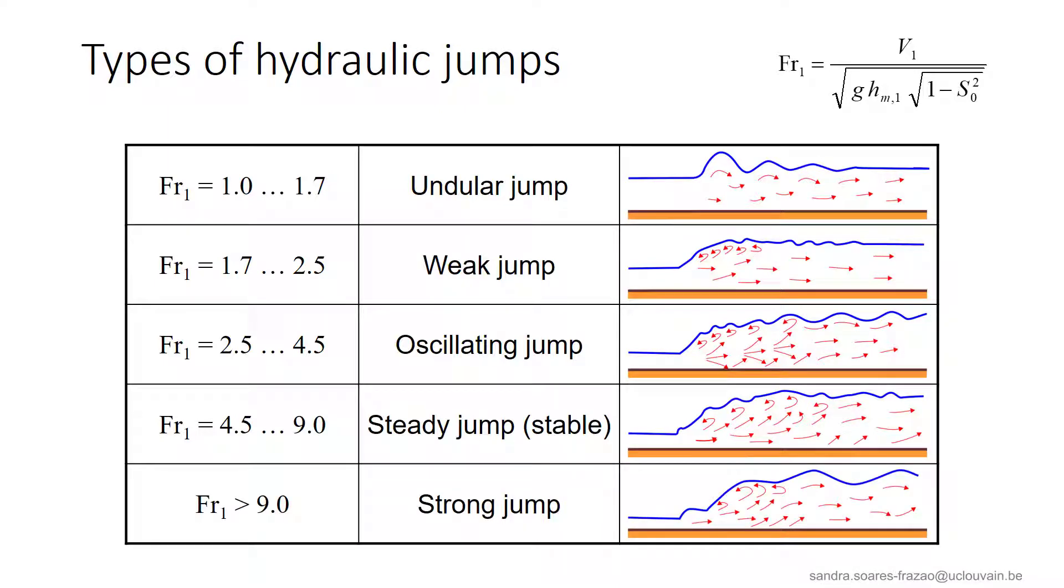Finally, for Froude numbers larger than 9, we have the strong jump, in which the rollers interact with the bottom jet, which induces important waves in the downstream direction. Of course, all these limits are indicative. These also depend on the shape of the cross section and on the local conditions.